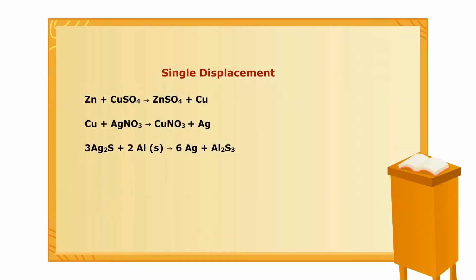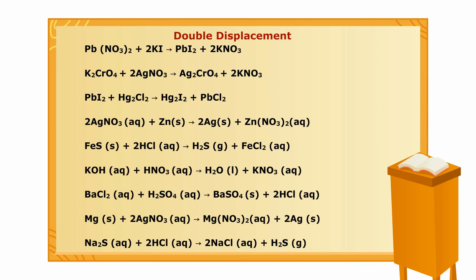That is why, if a chemical equation for the displacement reaction shows one element and one compound on the reactant side, we can identify it as single displacement reaction equation. And the displacement reaction in which both the reactants on the reactant side are compounds, then it is a double displacement reaction.